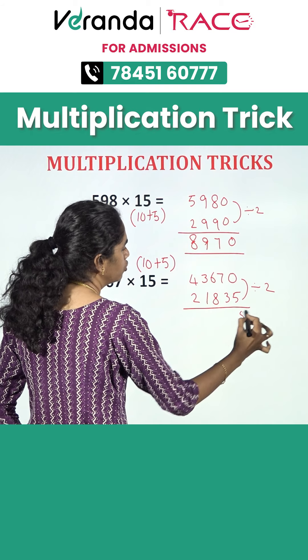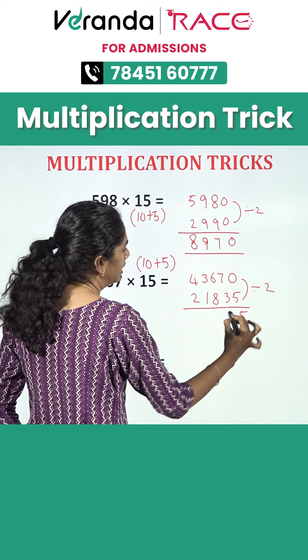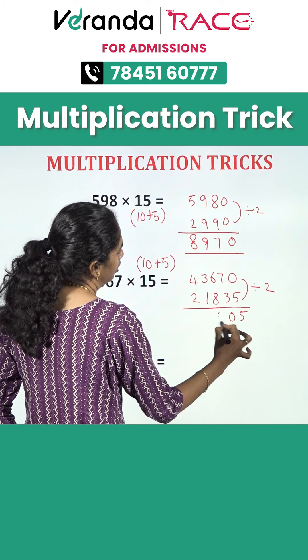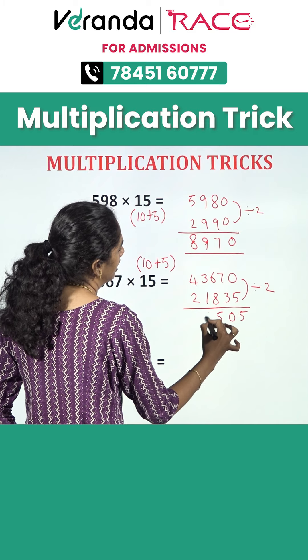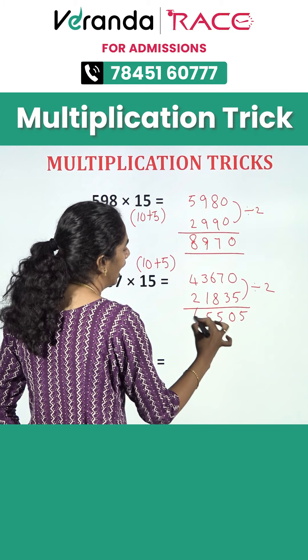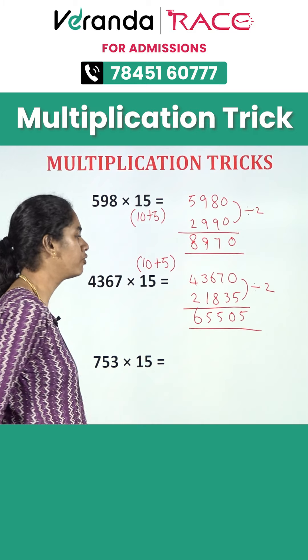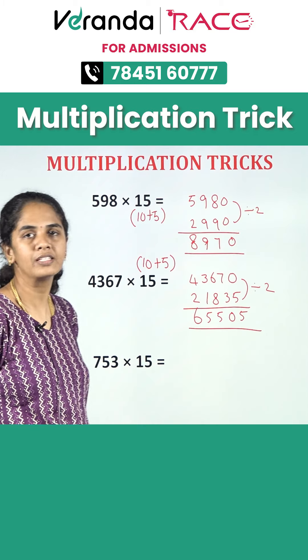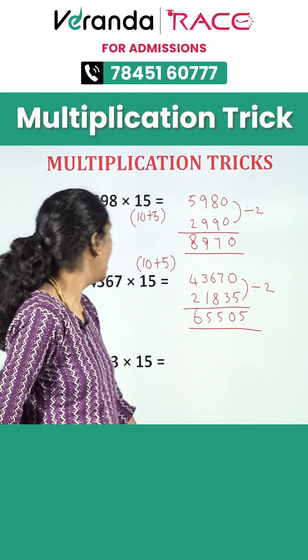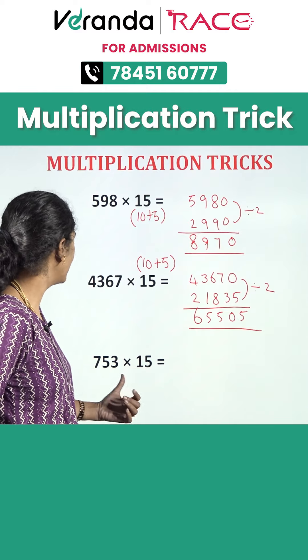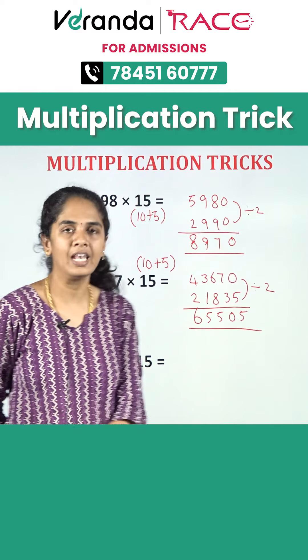Next, we need to add these two. So, 5, 10, 15, 5 and 6. So 65505 is our answer. Comment your answer for the last question.